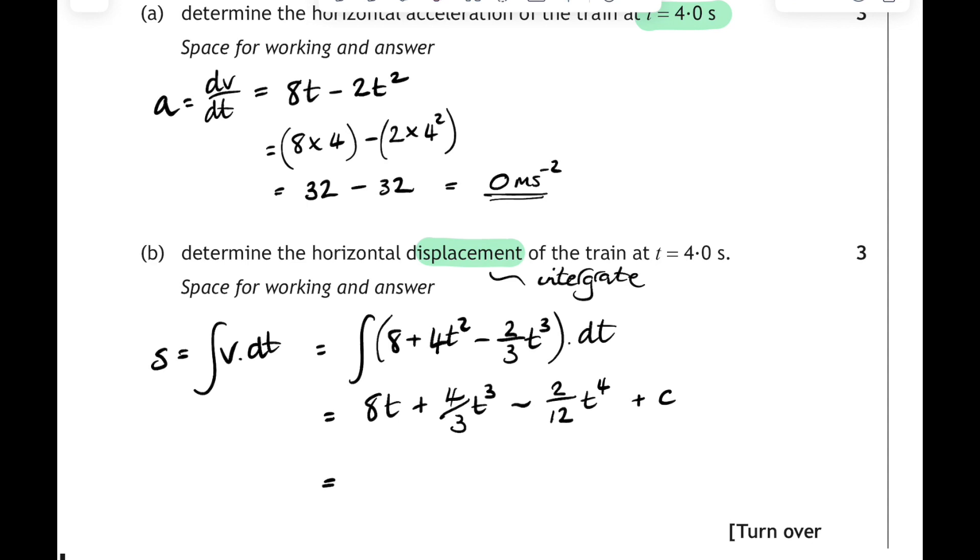And don't forget to add your constant of integration. That constant will be equal to 0, remember, because at t equals 0, s equals 0. Then all we have to do is substitute in for t equals 4 seconds. So 8 times 4, 4 over 3 times 4 cubed minus 2 over 12 times 4 to the power of 4. Tricky one on your calculator, but it gives you an answer of 75 meters.